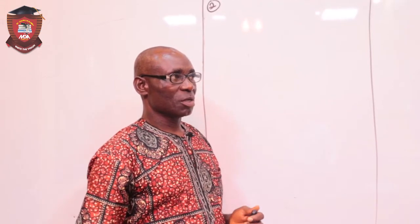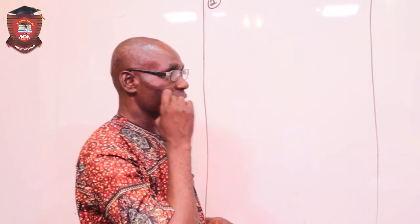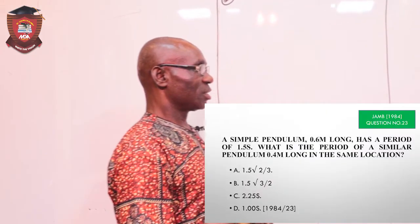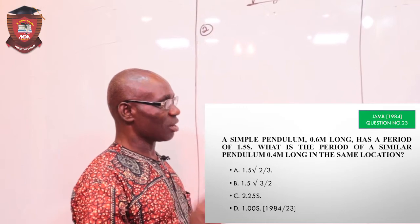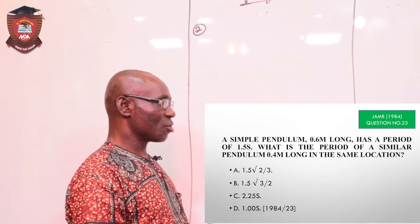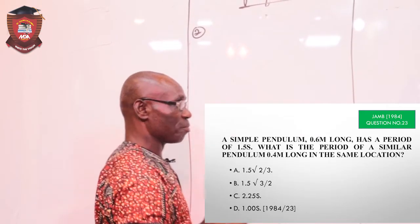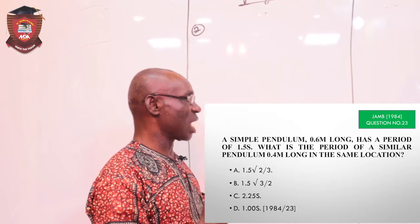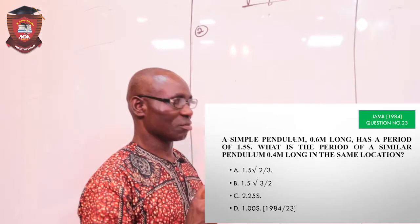Okay, question number 2 is JAM 1984, number 23. And it reads: a simple pendulum, 0.6 meters long, has a period of 1.5 seconds. What is the period of a similar pendulum, 0.4 meter long, in the same location? That's the question.